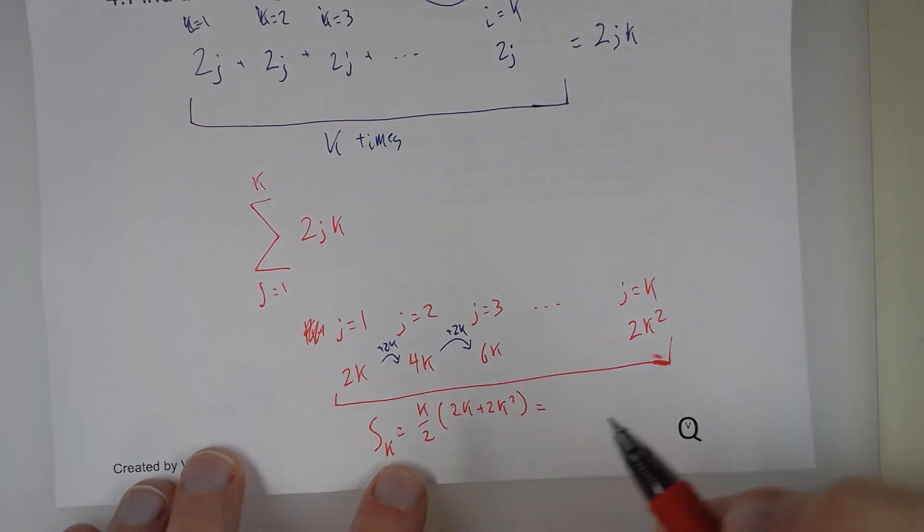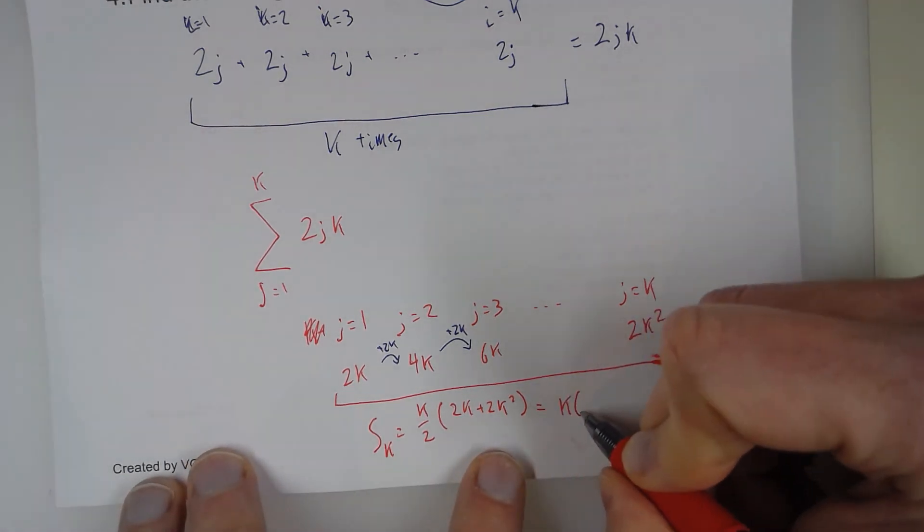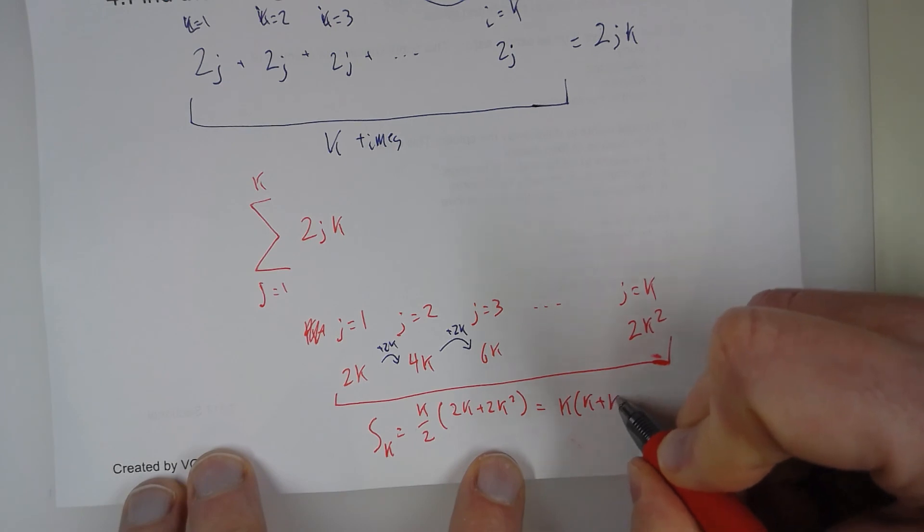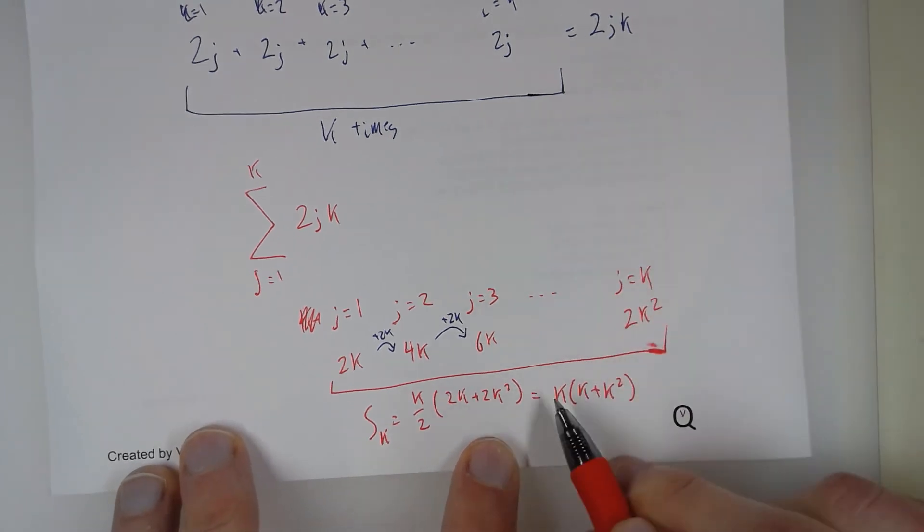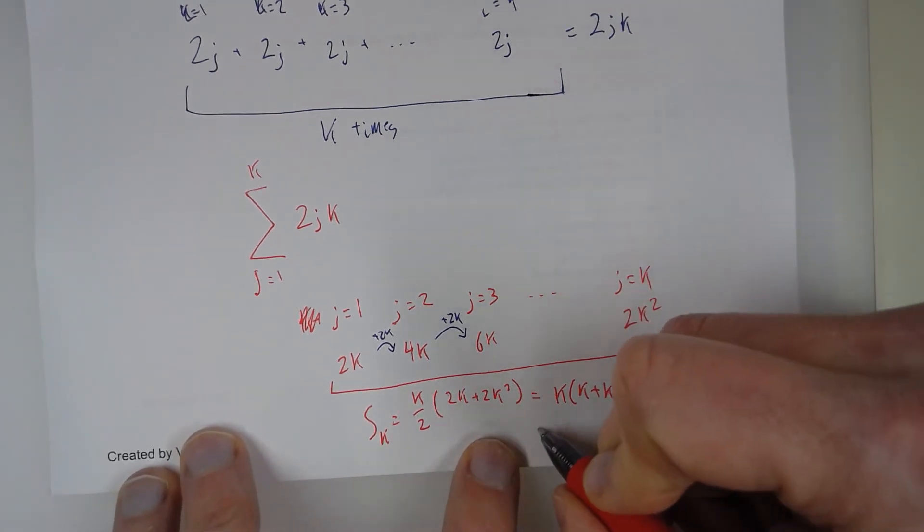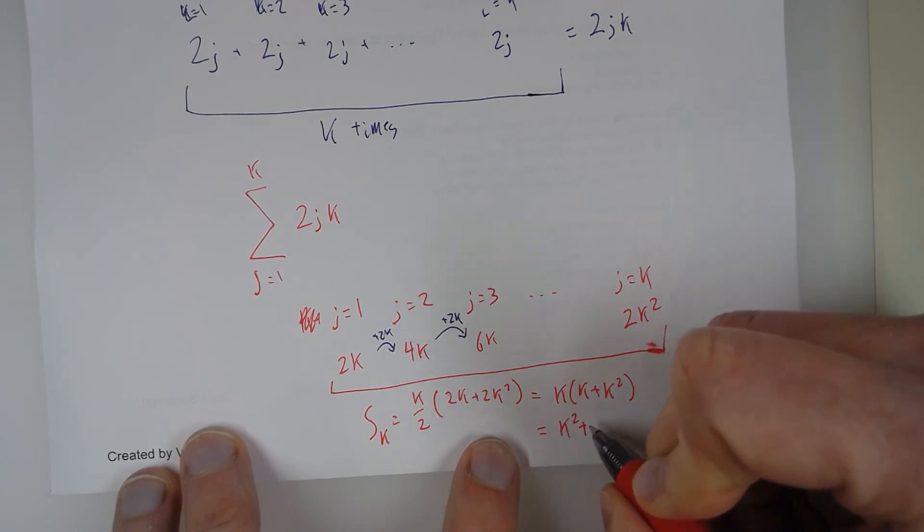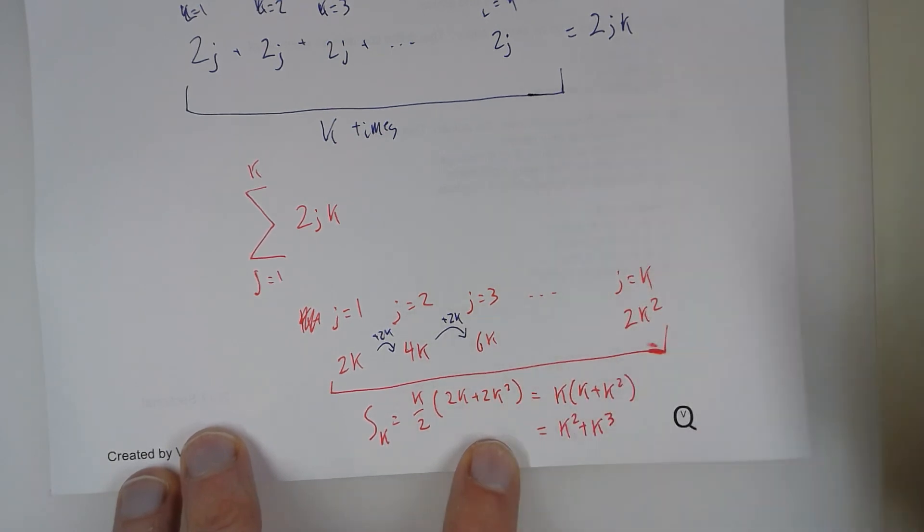Now I can cancel this 2 with the 2's inside. So I have k times k plus k squared, which leaves us as k squared plus k cubed.